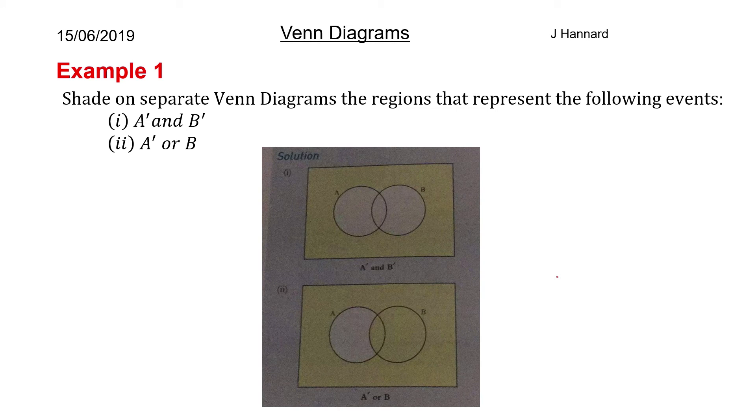So here you go, another nice little diagram from the book. So A dash and B dash is basically A doesn't happen and B doesn't happen. So that means nothing inside this Venn diagram works, so it must be everything outside. So we shaded in the outside, the universal set I guess minus the probability of A and B and the intersection.